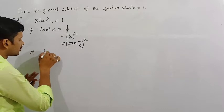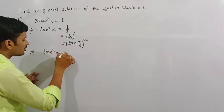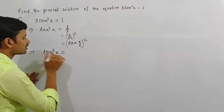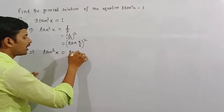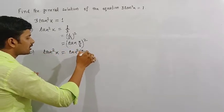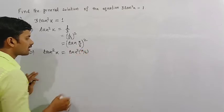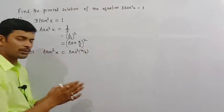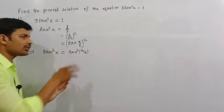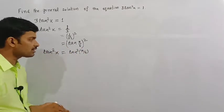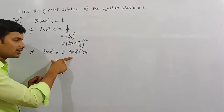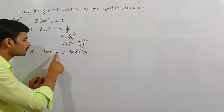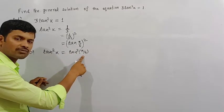Now tan squared x is equal to tan squared pi by 6. In which form of the theorem does this equation fall? This equation is matched with the form of the theorem: tan squared theta is equal to tan squared alpha.